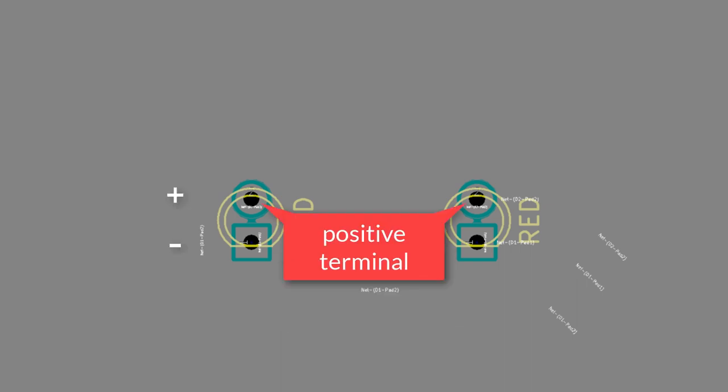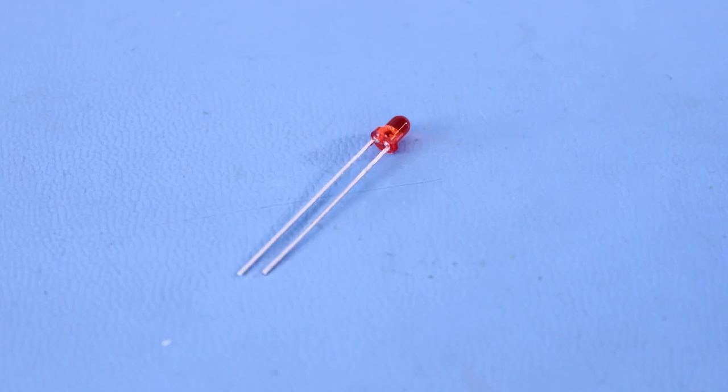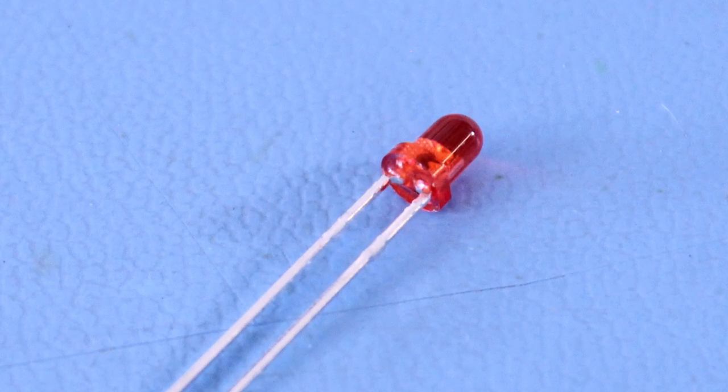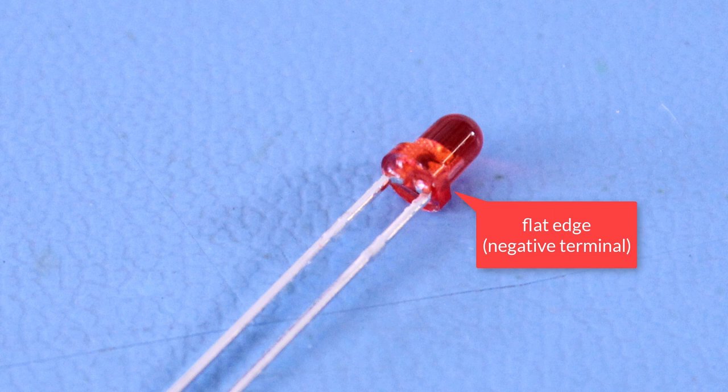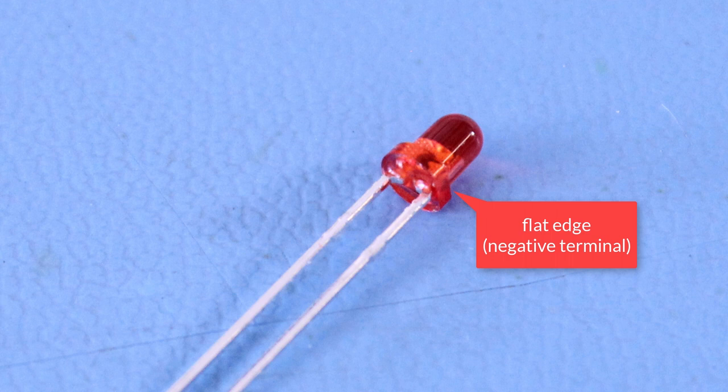That means the top pin, the one closest to the notch cutout, is the positive pin. If you look closely, most LEDs will have a flat edge on the ring around the bottom of the component body. This flat edge denotes the cathode or negative pin of the LED.